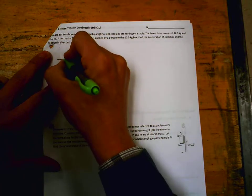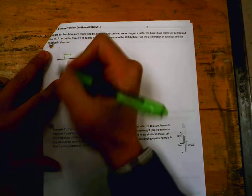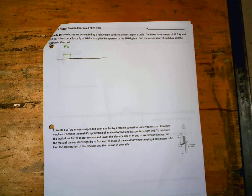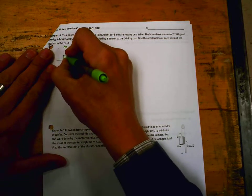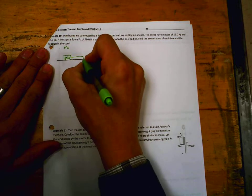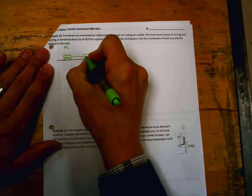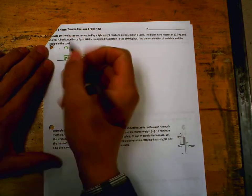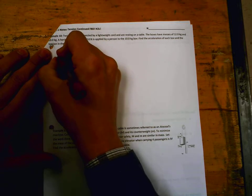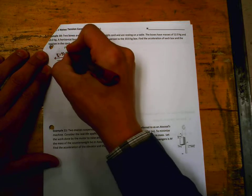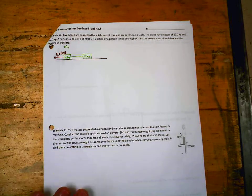Got this box here in front, we'll call that M1. We like to label everything and make sure that we are being specific about which mass we're talking about. M1 is 10 kilograms. Then there's a cord between them, and the other mass is 12. We'll call this M2.